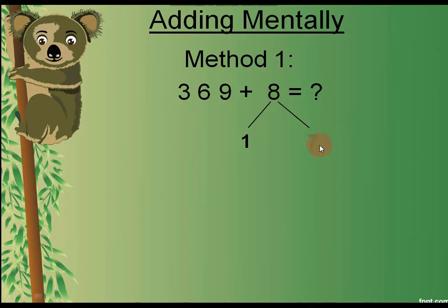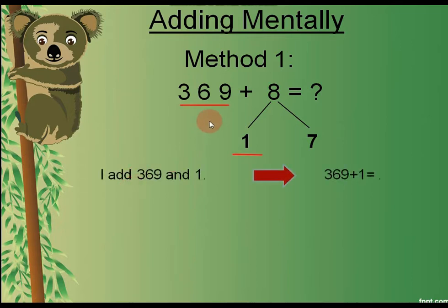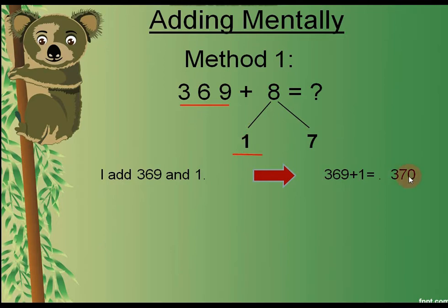To complete the number bond of 8, we write 7 here, since 7 and 1 makes 8. So the first thing we will do is add 369 and 1. After adding, we will get 370. We selected 1 because we can make 70, which makes our mental addition easier.